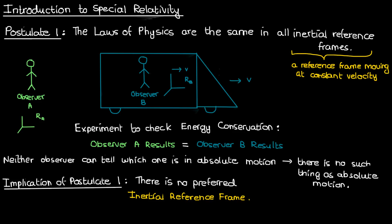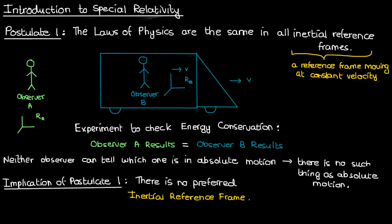This might confuse you — you might say, an observer in an inertial reference frame who measures something can't get a different measurement for that same object compared to a different observer in a different inertial reference frame. But actually in special relativity I'm going to show you some examples where the same object can be measured differently by different observers in different inertial reference frames, but that's later on in the series.